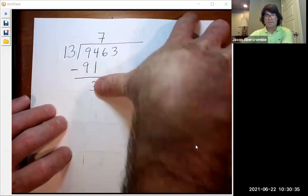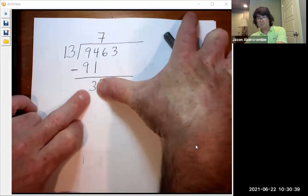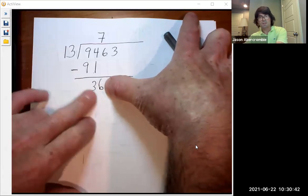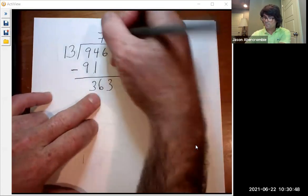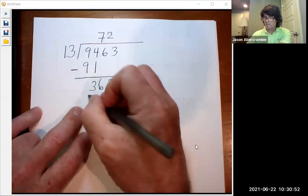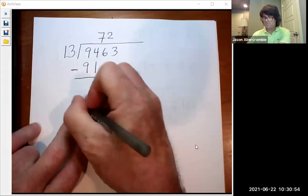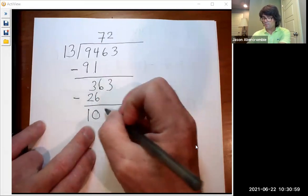And now I'm going to ask, does 13 go into 3? No, it doesn't. What about 36? Does 13 go into 36? Yes, it does. It goes in 2 times. 2 times 13 is 26, so 2 times 13, 26 right there. Subtract 1, 0, and 3.